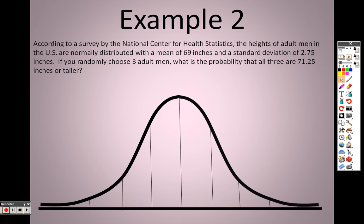Example 2, according to a survey by the National Center of Health Statistics, the height of adult men in the U.S. are normally distributed with a mean of 69, a standard deviation of 2.75, so 69 in the middle. Add 2.75, keep going up. Subtract 2.75, keep going down. There it is, all filled in.